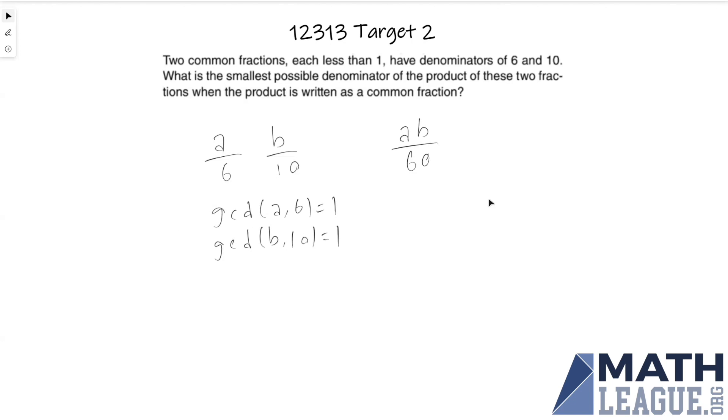We're also given that both fractions are less than one, which means we can limit the possibilities of a and b to a lot fewer numbers. So a can equal one, it cannot equal two because two and six would give two, it cannot be three either because greatest common would be three, it cannot be four either but it can be five.